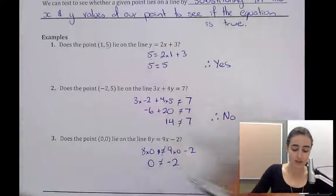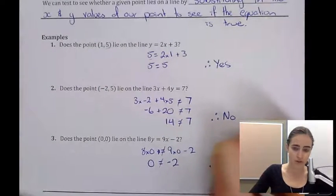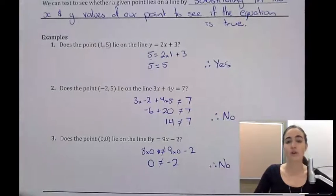And again, because 0 is not equal to minus 2, we would have therefore no, the point does not lie on the line.